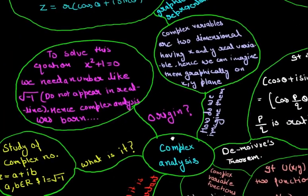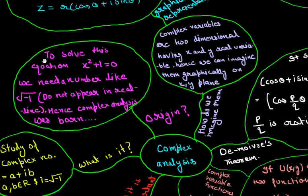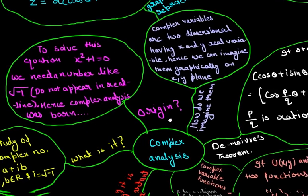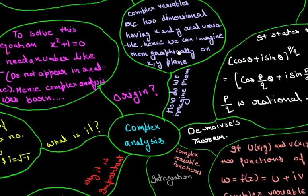Now let's go in here. It says the origin. To solve this equation x square plus one equal to zero, we need a number like root of minus one, which is iota, which does not appear in the real line. Hence complex analysis was born. So this is the end of this branch.